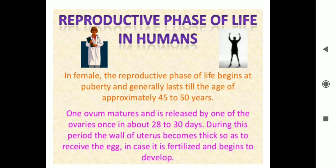This phase is much longer in males compared to females. In females, one of the ovaries matures and releases an egg once in about 28 to 30 days every month. During this period, the wall of the uterus becomes thick so as to receive the egg — in case the egg is fertilized, it begins to develop into a new individual, and if it doesn't, then it breaks down.